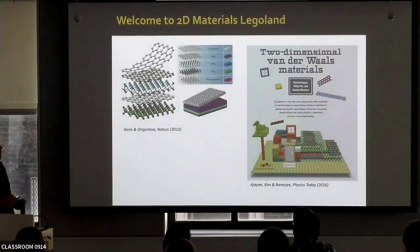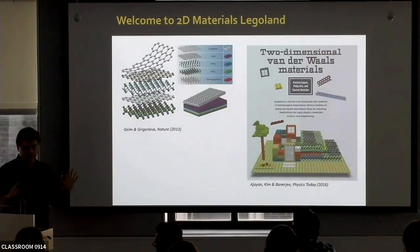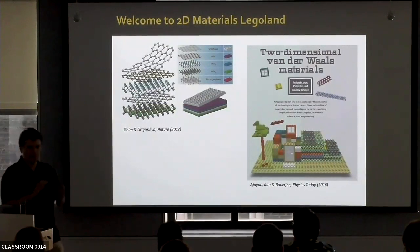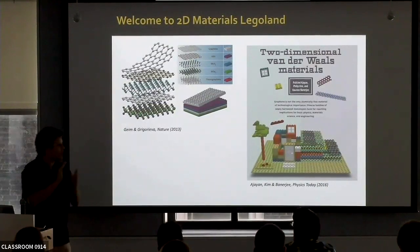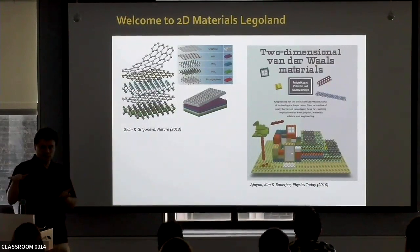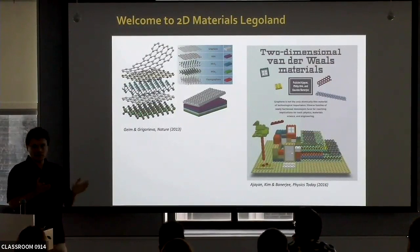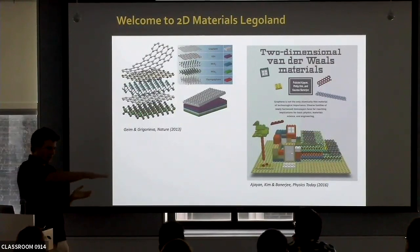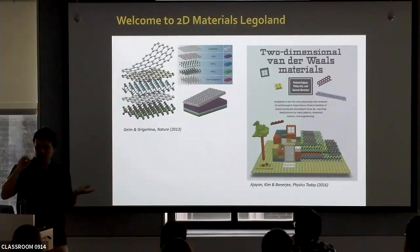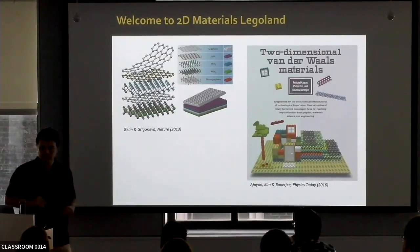Over the past 15 years or so, we've been having a lot of fun with 2D materials. The first one isolated was graphene and then a whole bunch of others came. It was great to study each of these materials individually, but then people quickly realized that because you can isolate a monolayer from many of these bulk layered materials, you could also just assemble them back together.